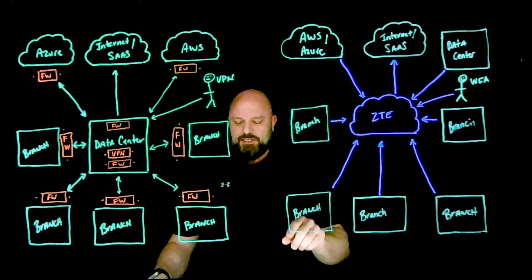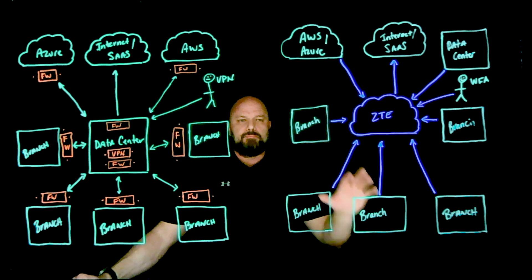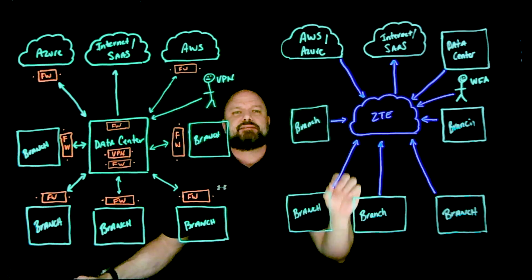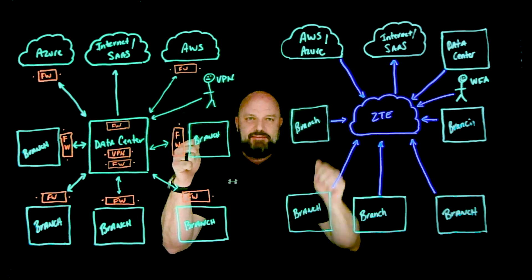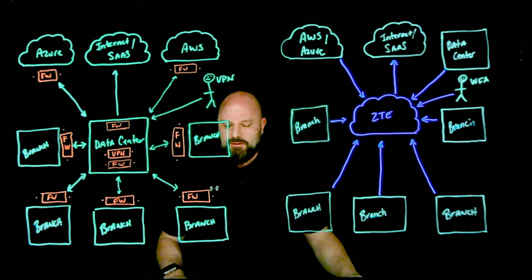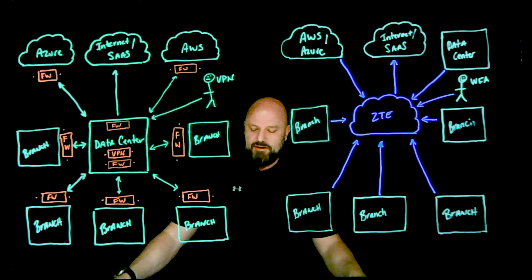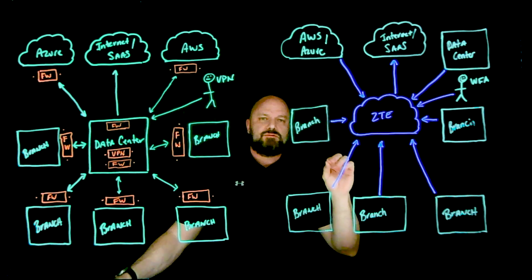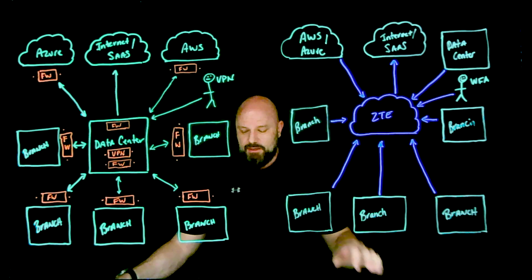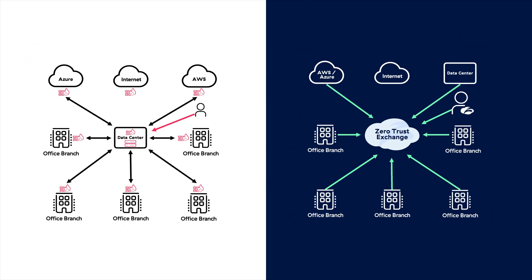We're taking the branch and making it completely invisible. We're brokering access based upon the user and the context — entity A to entity B — and then securing the connection. Again, there are no inbound connections right here, and we're doing this to secure your private applications back behind the Zero Trust Exchange.